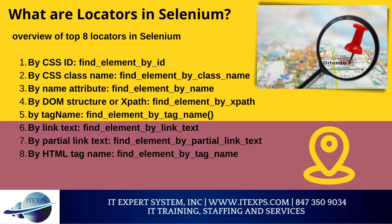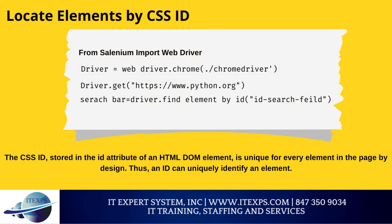What are locators in Selenium? There are 8 top locators: By CSS ID (find element by ID), By CSS class name (find element by class name), By name attribute (find element by name), By DOM structure or XPath (find element by XPath), By tag name, By link text, By partial link text, and By HTML tag name. To use the CSS ID locator, the ID attribute of an HTML DOM element is unique for every element on the page. One calls the find element by ID method of the WebDriver class. If no DOM element with the searched ID exists, a NoSuchElementException is raised, which can be handled using a try-catch block.